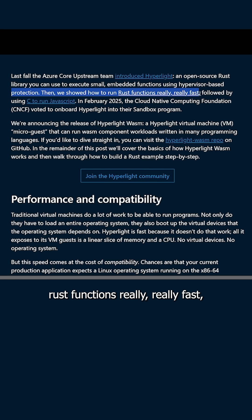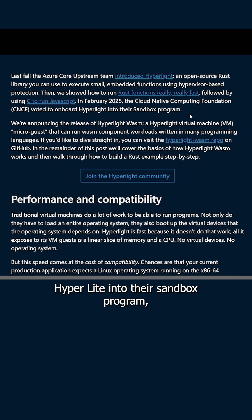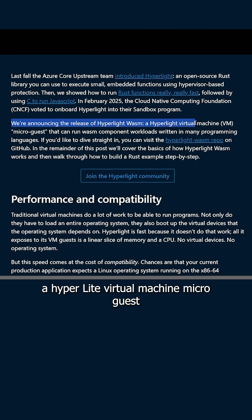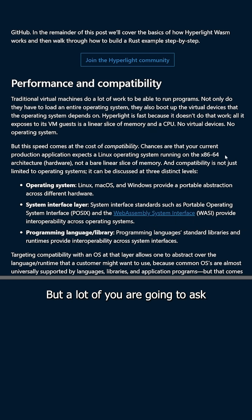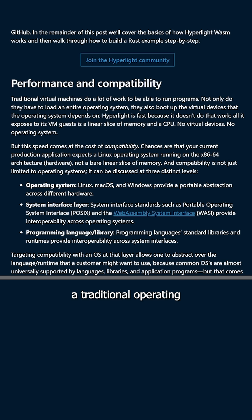Microsoft talks about how the Azure Core Upstream team introduced Hyperlite — an open source Rust library you can use to execute small embedded functions using hypervisor based protection. They showed how to run Rust functions really, really fast, followed by C to run JavaScript. In February 2025, the Cloud Native Computing Foundation voted to onboard Hyperlite into their sandbox program. They're announcing the latest release of the Hyperlite web assembly, a Hyperlite virtual machine microguest, that runs web assembly component workloads written in many languages.